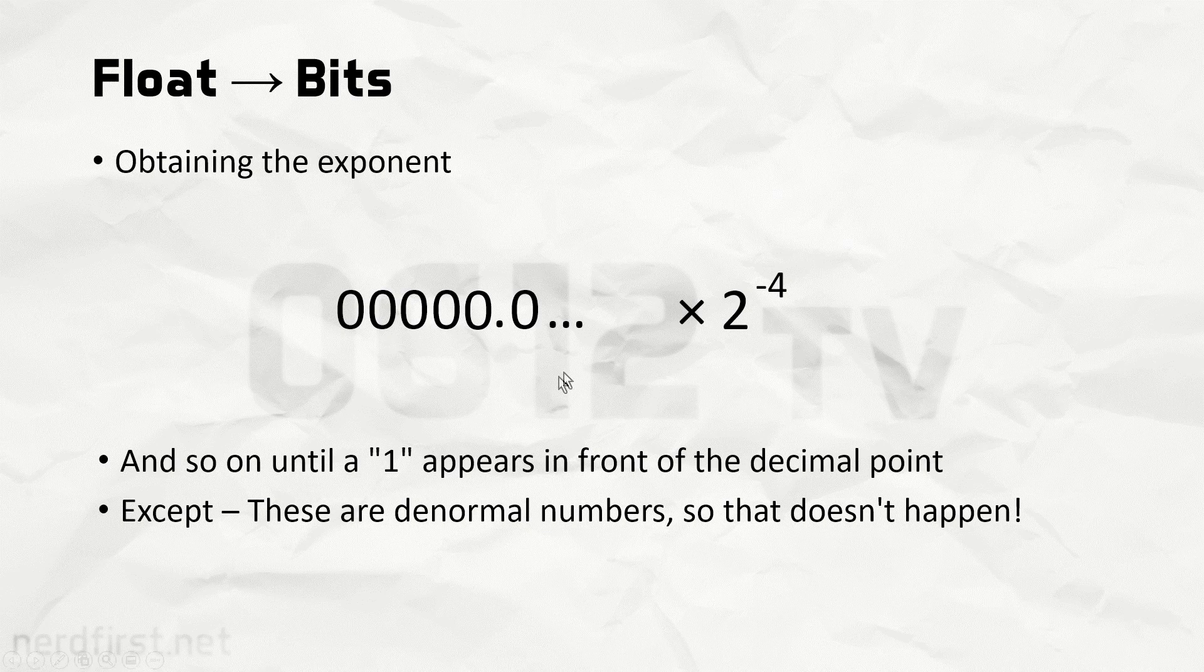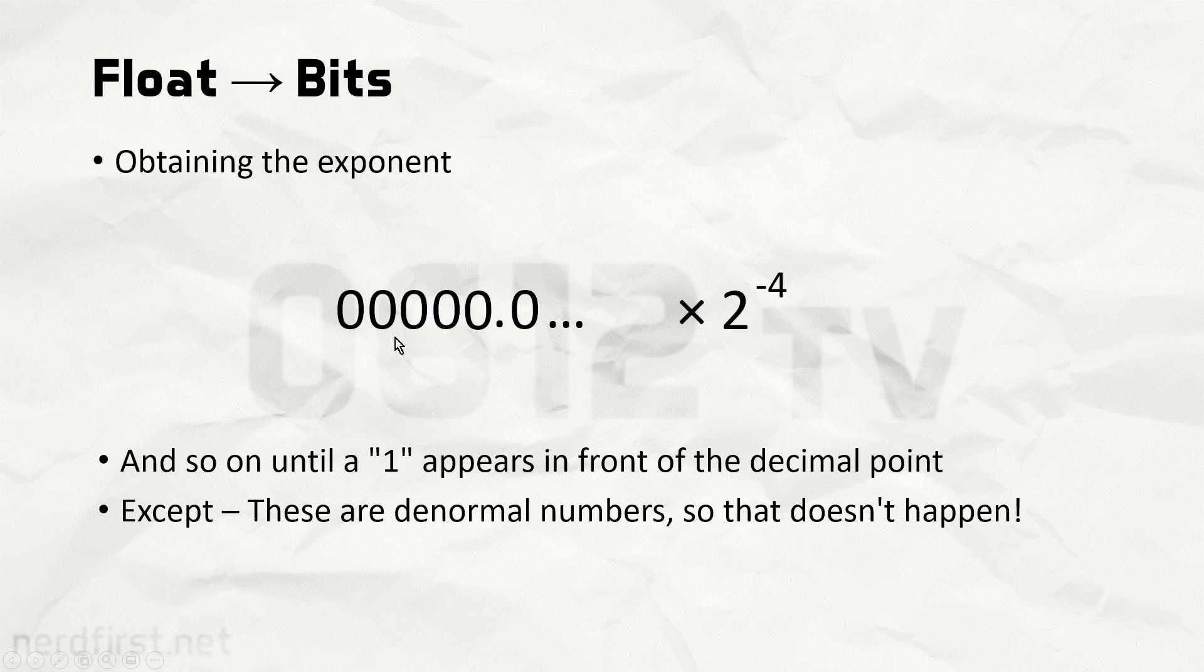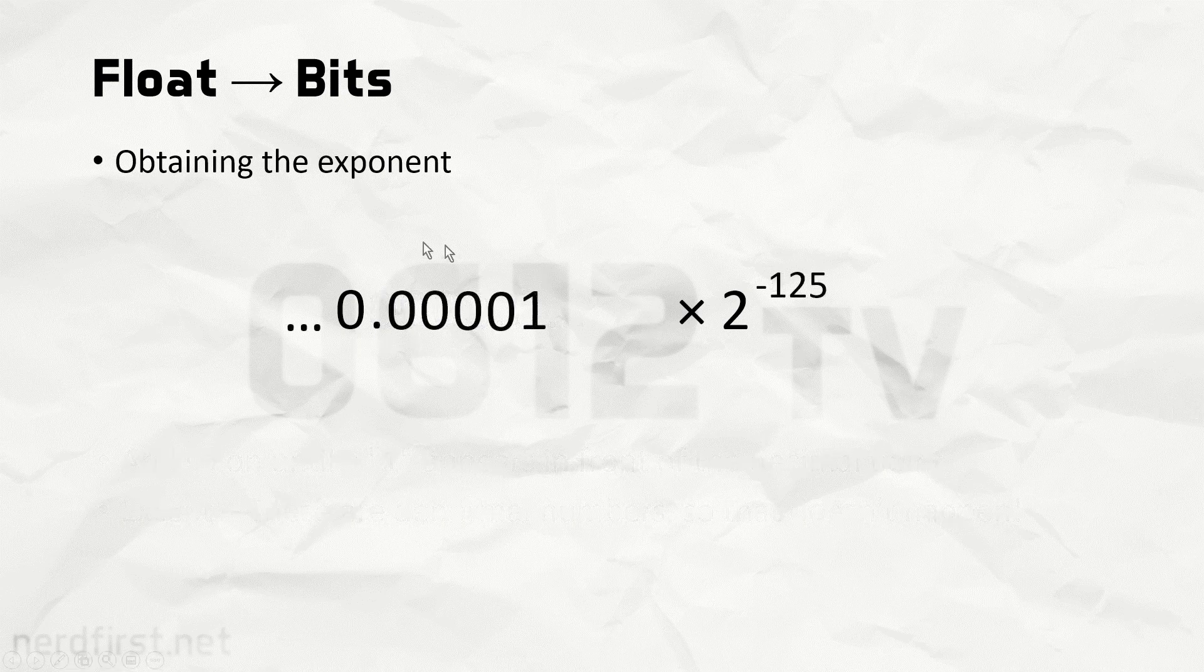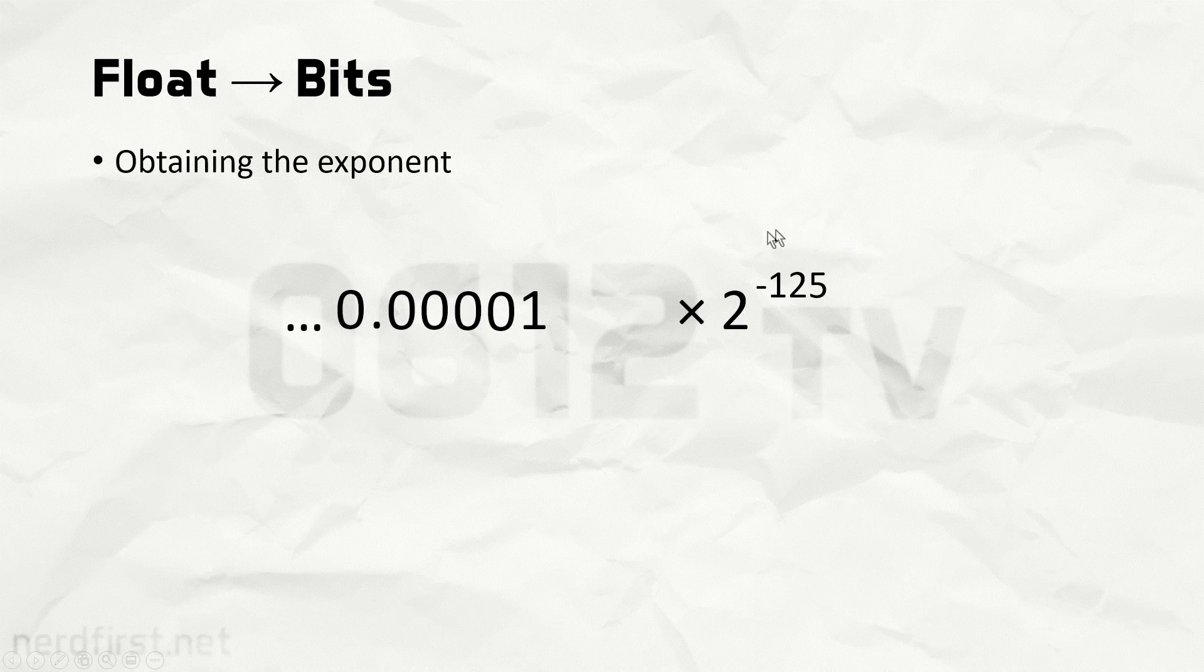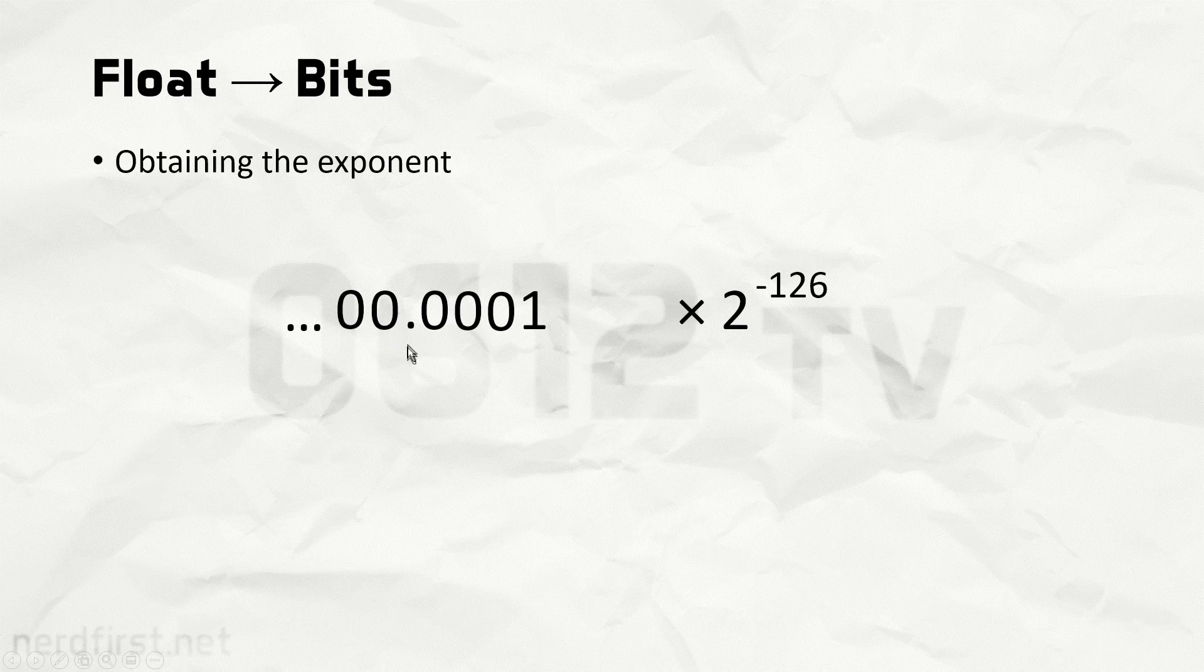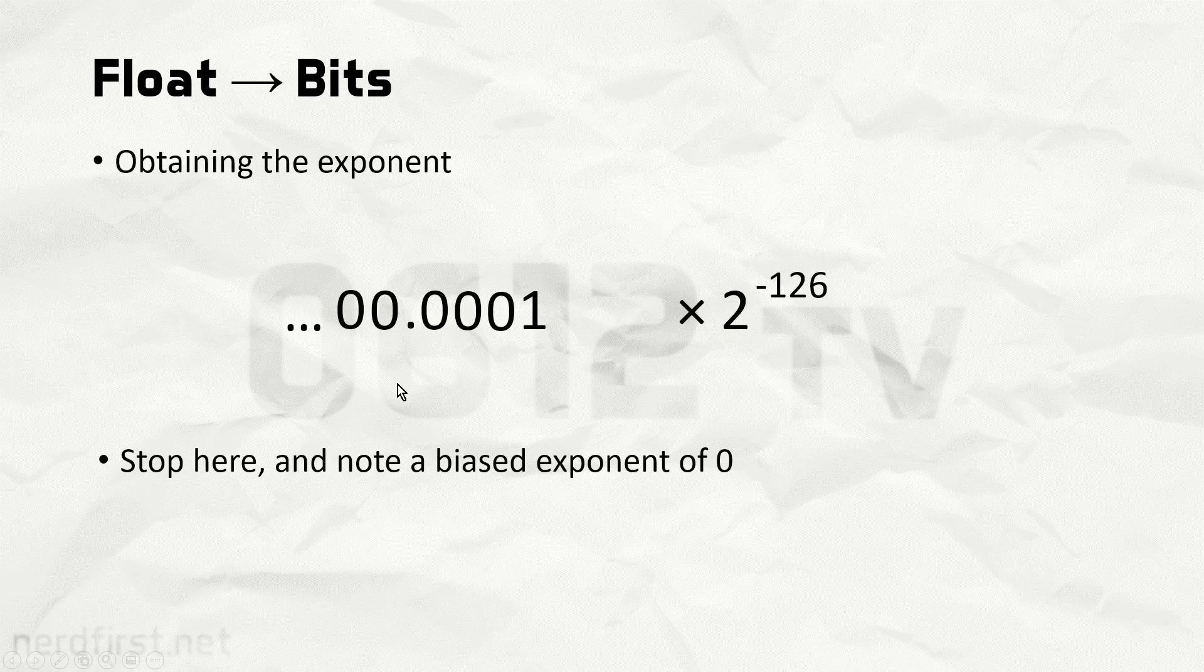What that means is our stopping condition needs to also include the case in which the number is actually denormal. We'll encounter this if we just keep on going until we reach negative 126. We know there is no negative 127 for the exponent or anything smaller than that, and therefore we have to stop here. The moment you see negative 126 and no one before the decimal point, you know for sure that this is going to be a denormal number.